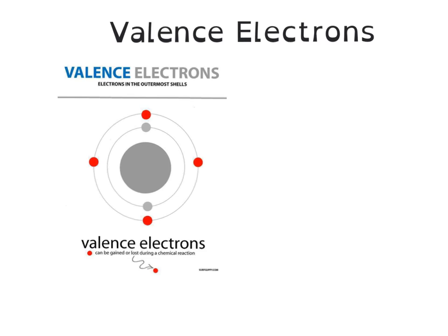How you decide how many valence electrons you have in any element is you either draw the Lewis structure, as shown here on the left, or you look on the periodic table.